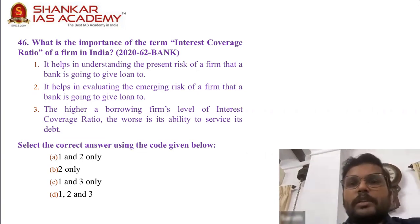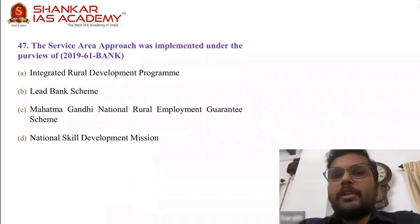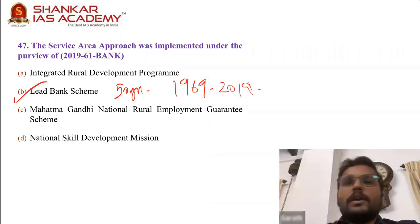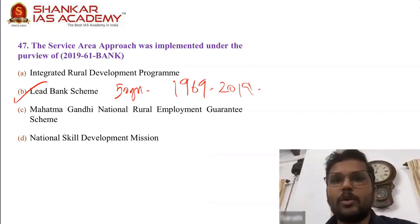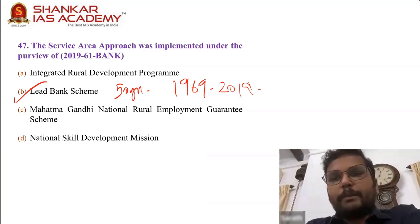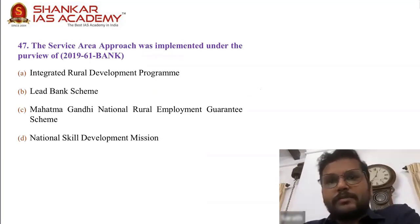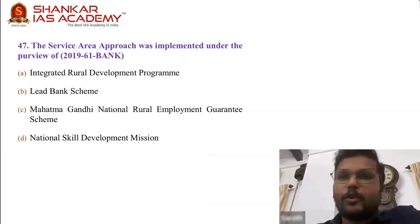Question 47 is about the lead bank scheme — service area approach. It was 50 years since the launch of the lead bank scheme in 2019, launched in 1969. To service a particular area, the lead bank had to give a strategy regarding what they are going to do — that is the service area approach. This is factual with no scope for guessing — if you don't know, you can't answer this.